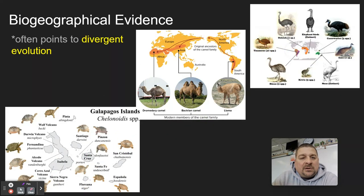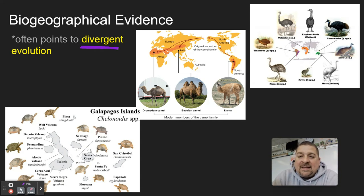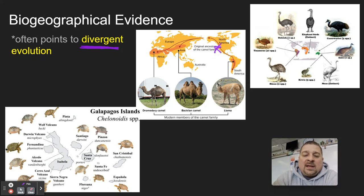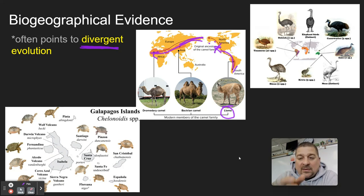Number two is biogeographical evidence, which often points to divergent evolution — the spreading out of that evolutionary tree where there's a common ancestor and they become different. One example is camels, whose original ancestors started in North America and as they moved across the Alaskan land bridge into Asia and Africa, you have the Bactrian and dromedary camels, and as they went south you have llamas and alpacas, showing how they spread and adapted to different environments.